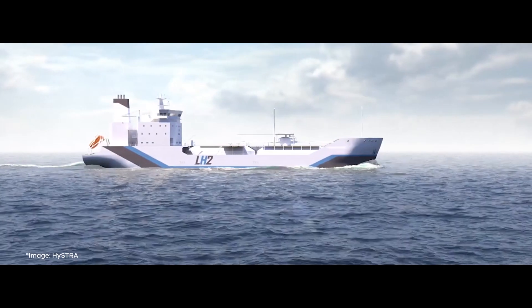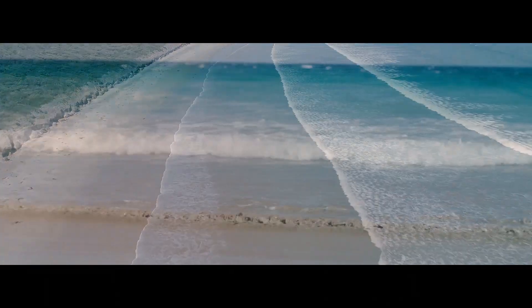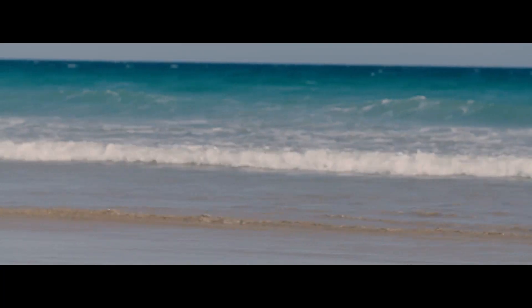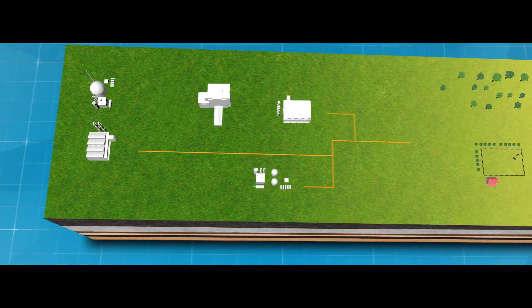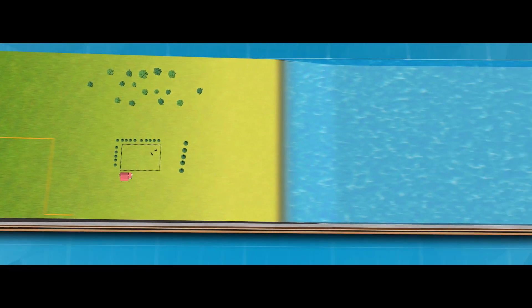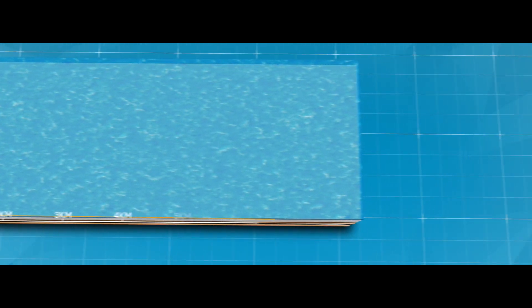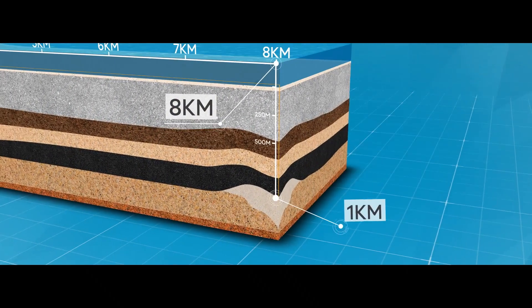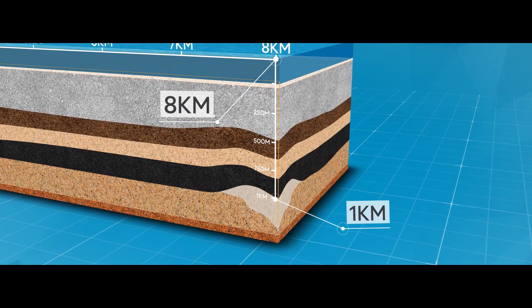The CarbonNet project is investigating the potential for a CCS network in Victoria's Gippsland region. The network will collect carbon dioxide emissions from industrial facilities in the Latrobe Valley and store them more than 1,000 metres under the seabed in Bass Strait.